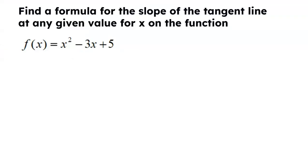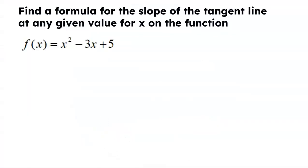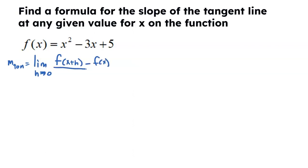Find a formula for the slope of the tangent line at any given value for X on the function. So instead of giving you a specific value like 3, we want to kind of just leave it open and generic. We are still going to use our same formula for the slope of the tangent line. So we're going to find the slope of the tangent line — it's the limit as H approaches 0. But I don't have an A value, so we just leave everything as X. It's F of X plus H minus F of X, all divided by H.